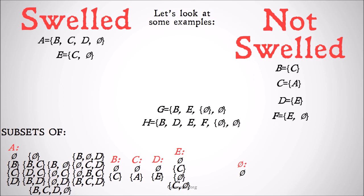What about G? G has as members B, E, the set of the null set, and the null set. Does G contain all of the subsets of B? It contains the null set, and it contains the set whose only member is C — which is identical to B since it contains B. Check on B. What about E? G contains the null set, which is a subset of E; it contains the set of C and the null set, which is identical to E; it contains the set of just the null set; and it contains the set of just C — because the set containing only C is B, and G contains B. So G contains all of the subsets of E.